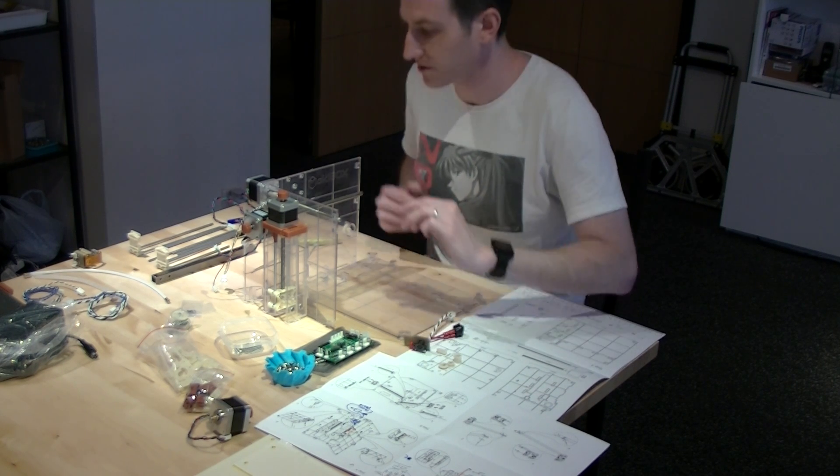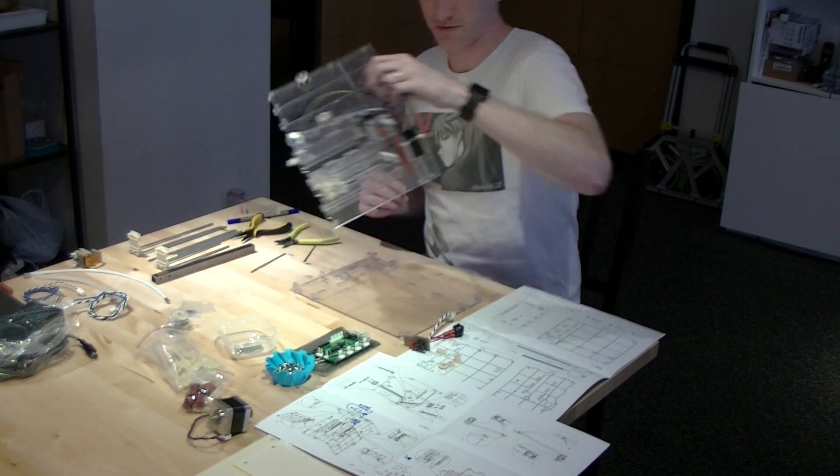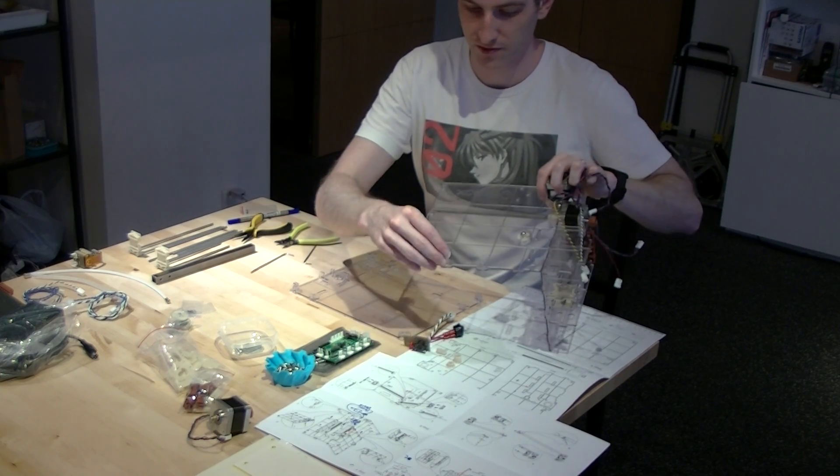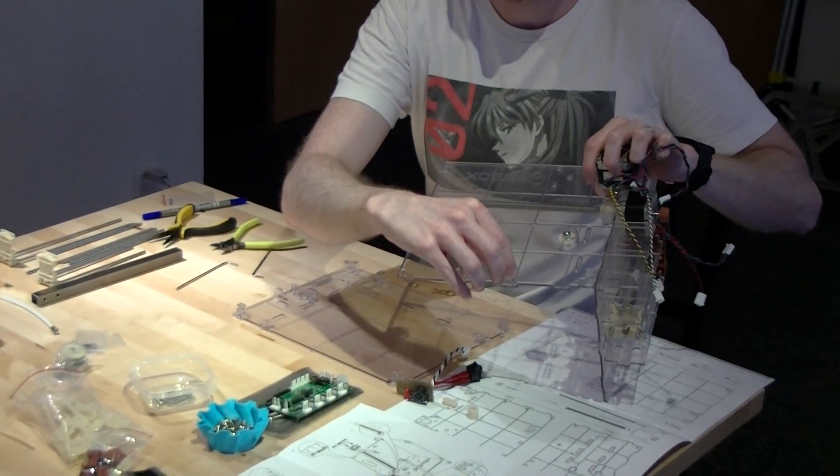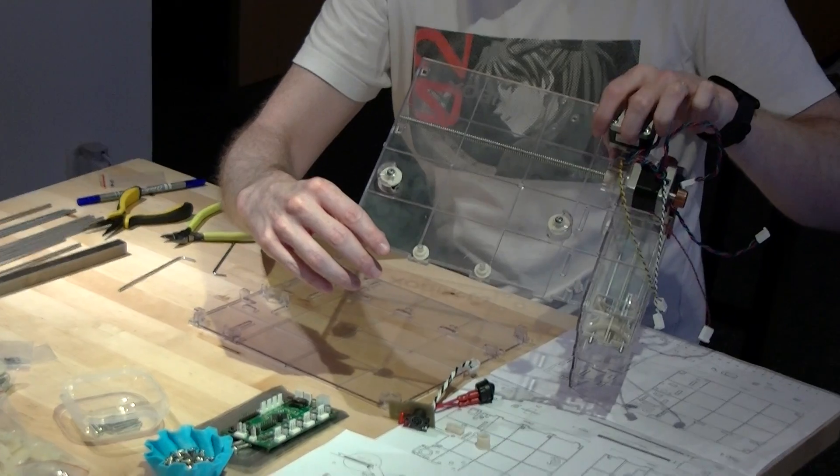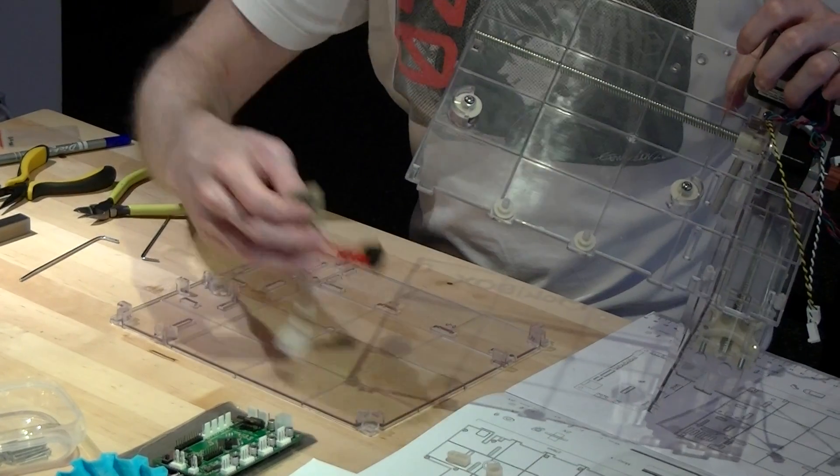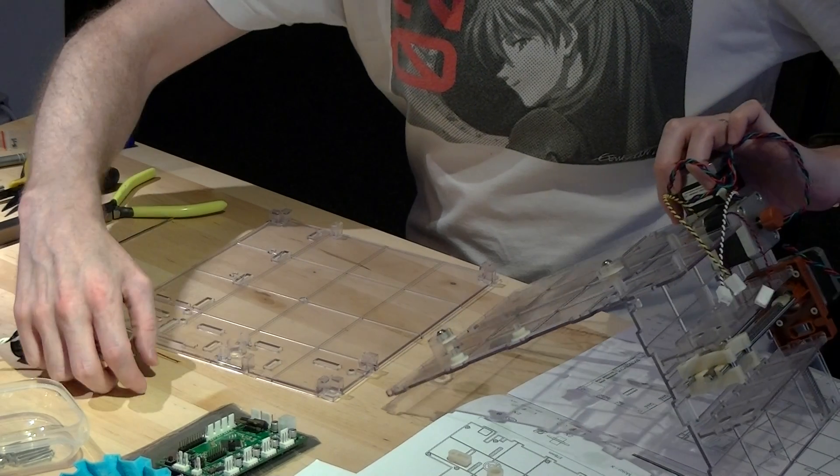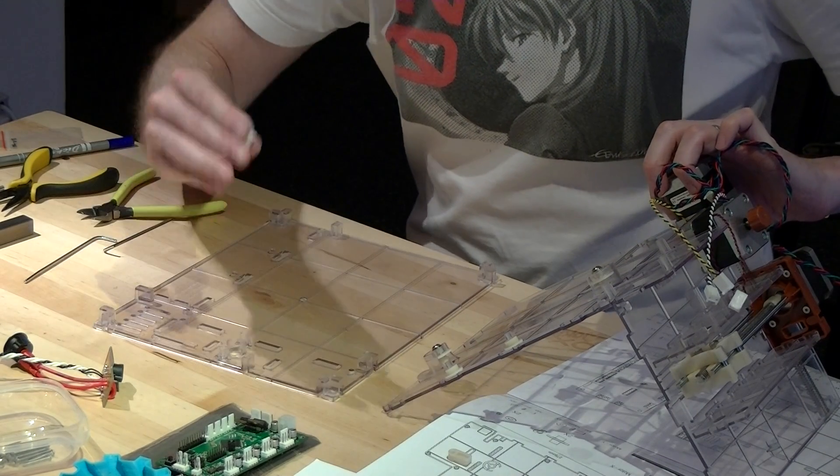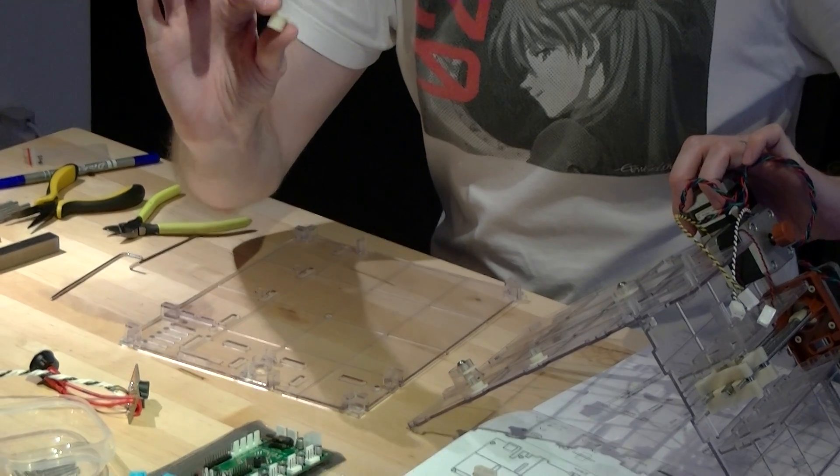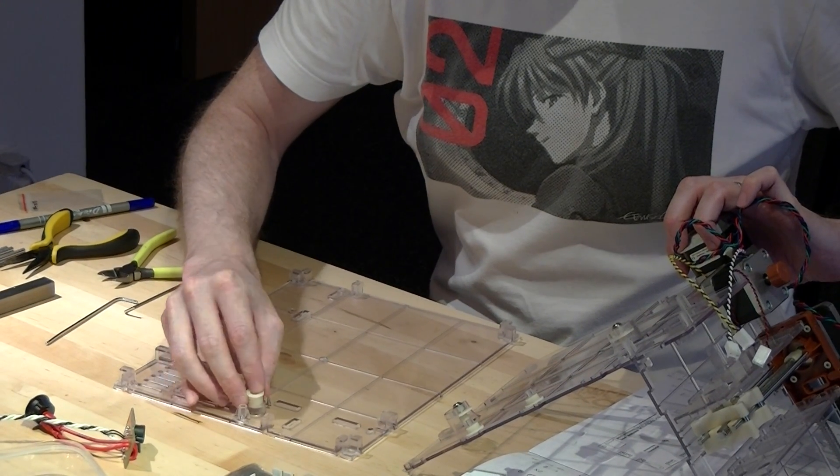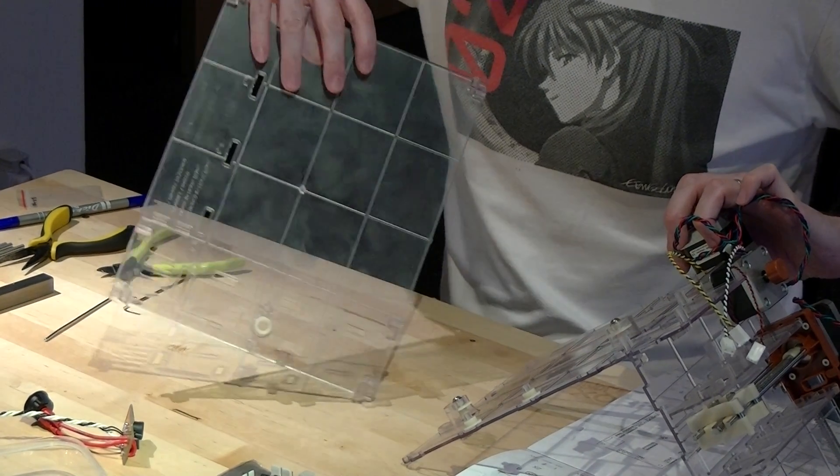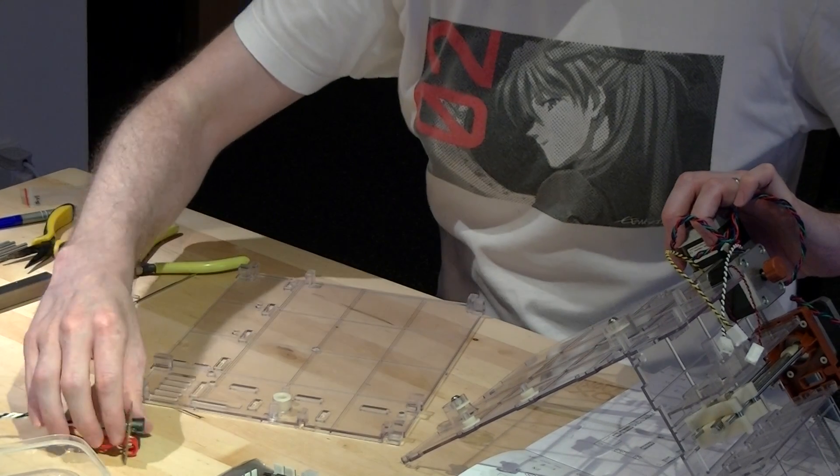So, we're going to start with the rollers. Just drop them onto those bosses right there. This insert for the Z axis goes right there. And it should just drop into place.